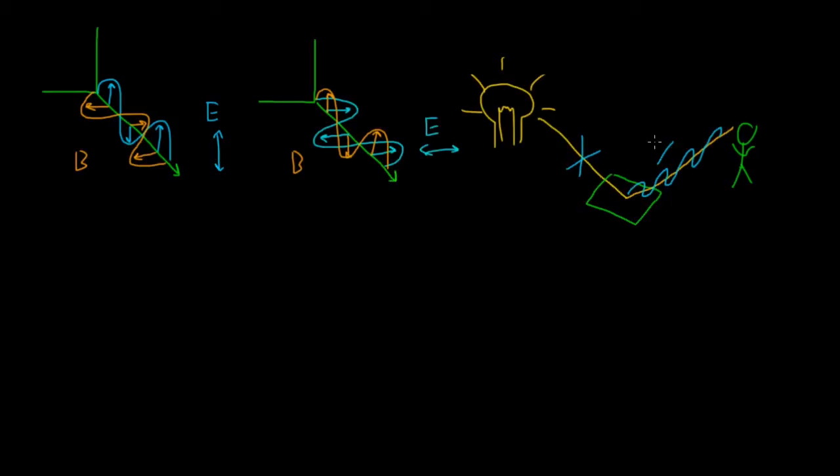Now, the key point of all of this is that the polarization of light can affect how light is scattered by particles. And we'll talk a little bit more about that in just a minute.